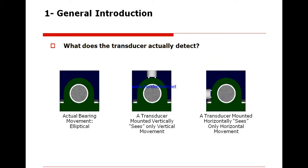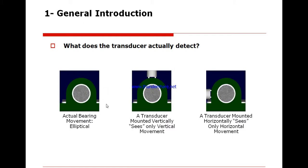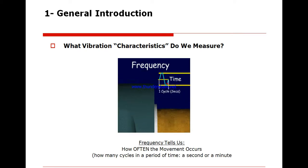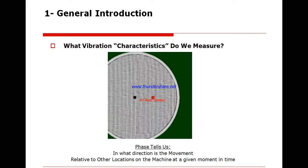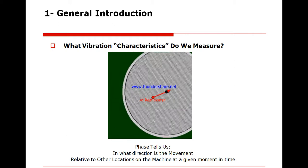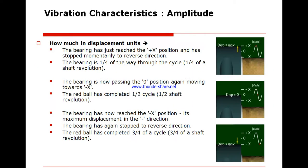For sensors, we have three types: elliptical, vertical, and horizontal — you can see the elliptical here. The vibration characteristics we measure are: amplitude (how much movement there is), frequency (how often the movement occurs per second), and phase (what direction the movement is).